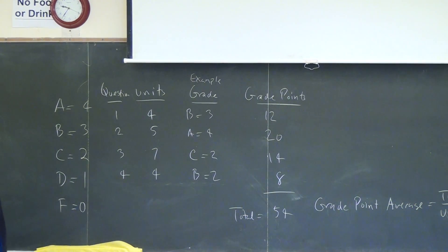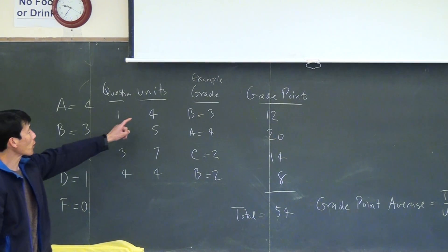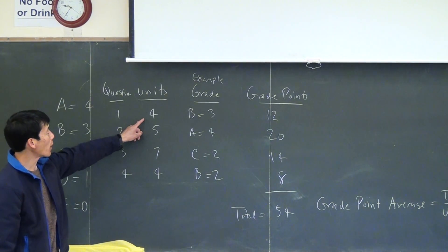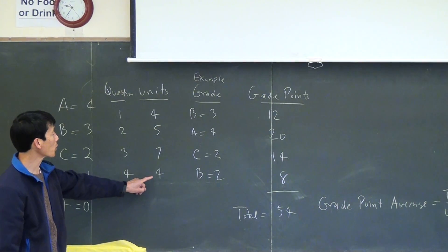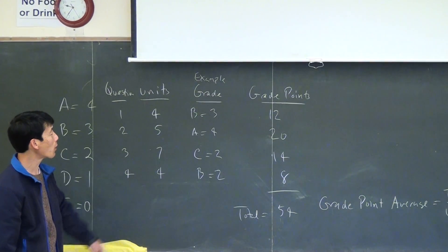For question 1, that was worth 4 units. Question 2 was worth 5, question 3 was worth 7, and question 4 was worth 4 units.